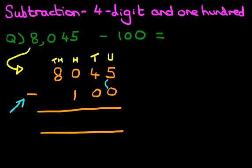Five minus zero is five. Tens column. Four minus zero is four.